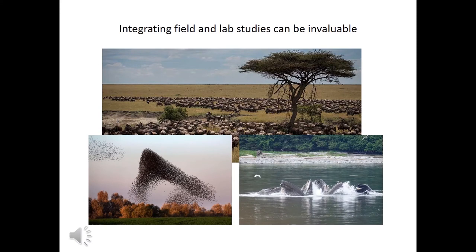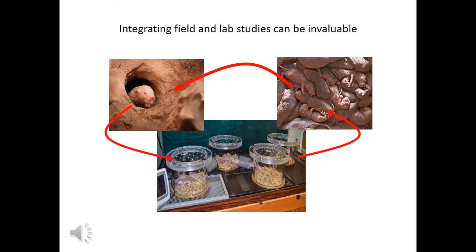The clear complementarity of field and laboratory studies suggests that researchers should attempt to integrate these two settings whenever possible. Unfortunately, for many of the natural systems that field biologists study, this just isn't a practical possibility. For those species that can be studied in both the field and the lab — such as the naked mole rats shown here — the benefits of this integrated approach can be substantial. For example, observations in the field can inform the design of controlled experiments conducted in the lab, and outcomes in the lab can then in turn be used to improve understanding of what these organisms are doing in their natural environments.